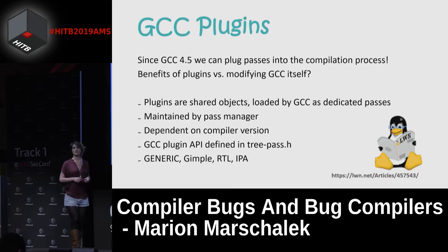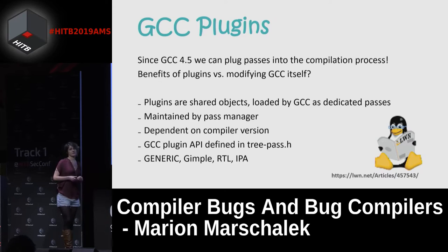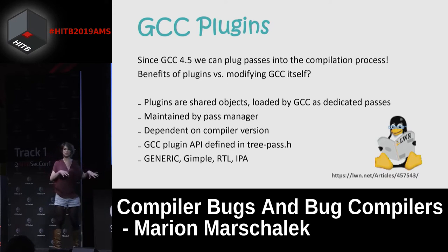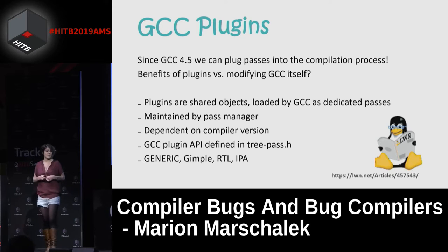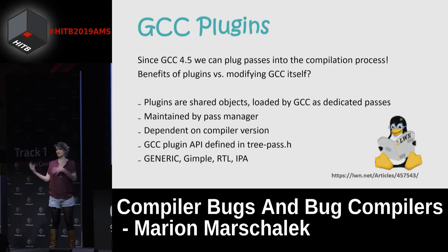If you ever try to modify your GCC compiler and recompile, you'll notice you spend a lot of time compiling, which makes it very unfeasible to work on the compiler source code itself. Thankfully, since GCC version 4.5, we can introduce plugins which have almost the same power and availability of APIs and data structures as tapping into the compiler source code itself — except that plugins are easy to compile and load. Most of the hacks I'll be presenting today were implemented using GCC plugins.